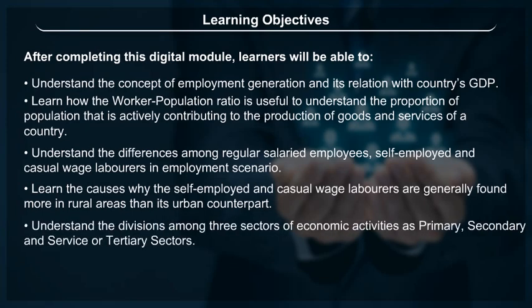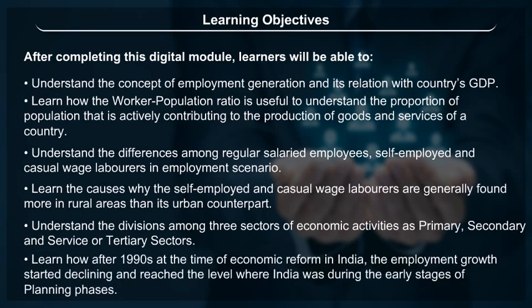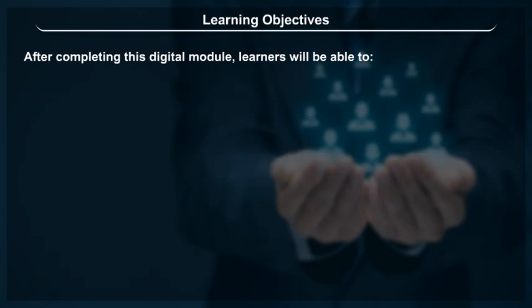Learners will understand the divisions among three sectors of economic activity: primary, secondary, and service or tertiary sectors. They will also learn how, after the 1990s, at the time of economic reform in India, employment growth started declining and reached the level where India was during the early stages of the planning phases.